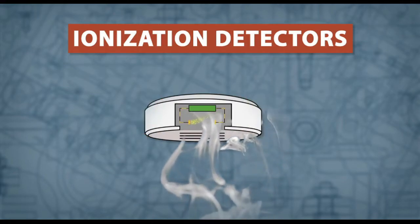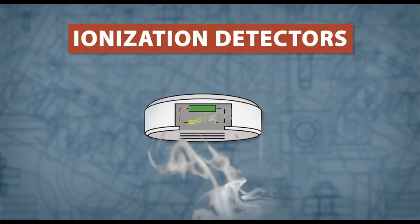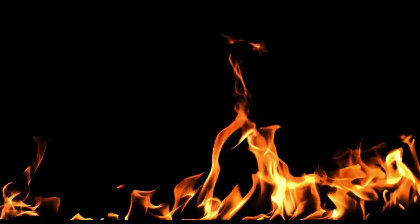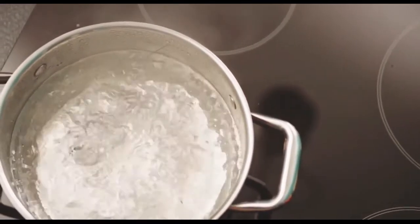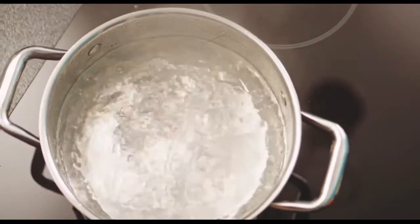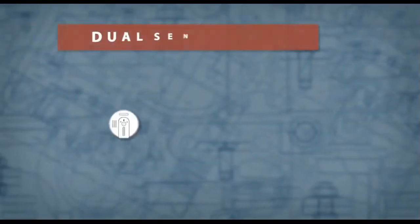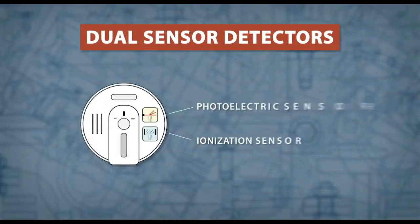Ionization detectors are stronger at detecting fast flaming fires. However, due to their design, they can be triggered by dust or steam. A dual sensor detector includes both a photoelectric and ionization detector, offering the best smoke and fire protection.